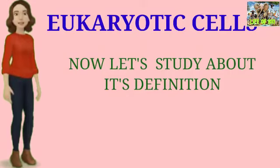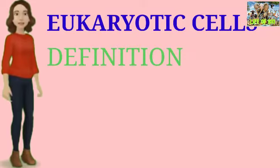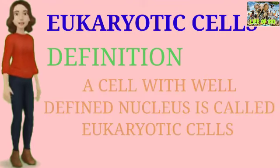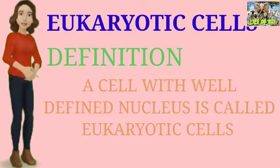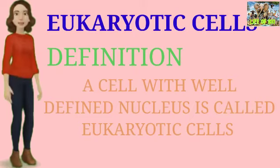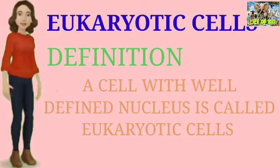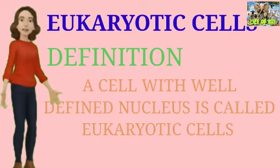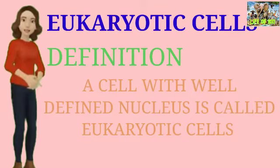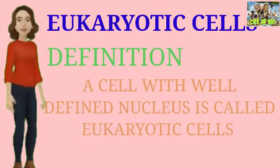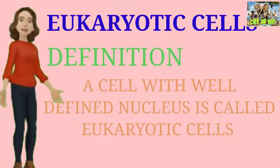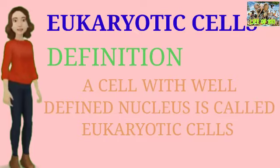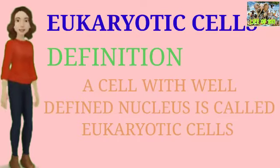Now let's study about its definition. Definition of eukaryotic cells: a cell with a well-defined nucleus is called a eukaryotic cell. A well-defined nucleus means a clear nucleus whose shape is perfect — we call it a well-defined nucleus — and these cells are called eukaryotic cells.